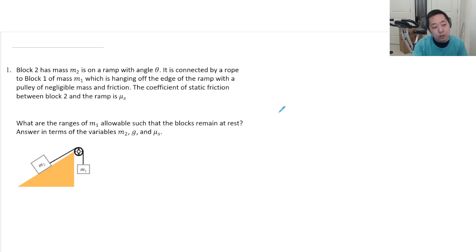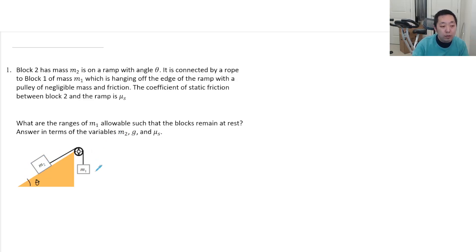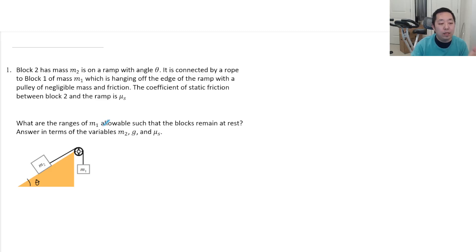We have block two with mass M2 on a ramp with angle theta. It is connected by a rope to block of mass M1, which is hanging on the edge of the ramp with a pulley of negligible friction. The coefficient of static friction between block two and the ramp is mu S. What are the ranges of M1 allowable such that the blocks remain at rest? Answer in terms of the variables M2, G, mu S, and theta.